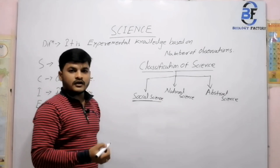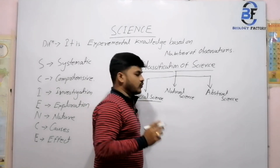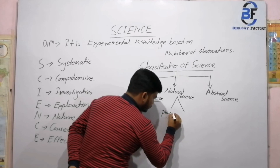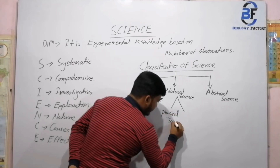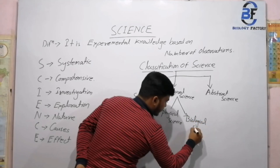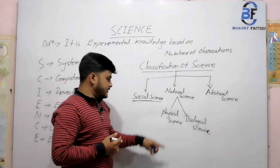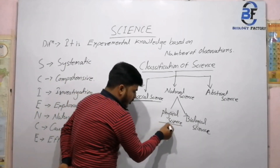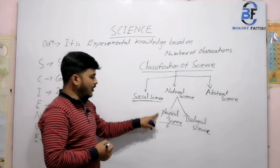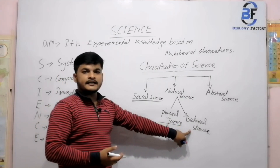Next, Natural Science. If we talk about natural science, it includes all the natural things, but it is again divided into two types: one is Physical Science and another one is Biological Science. Physical science is totally included in all the non-living things — things that have no life. Biological science is related to all the living things.